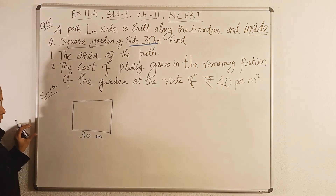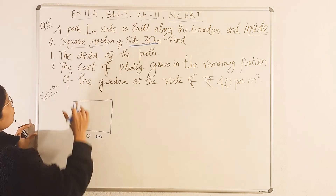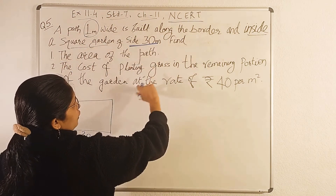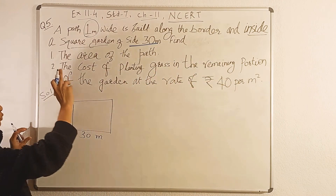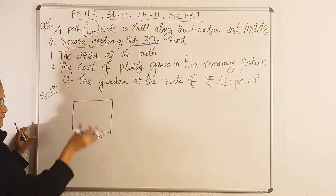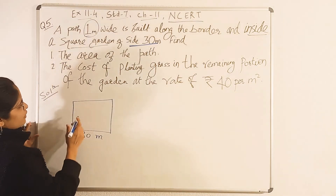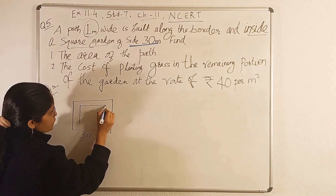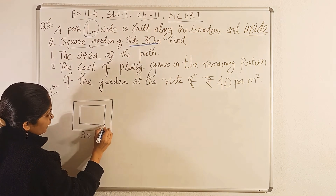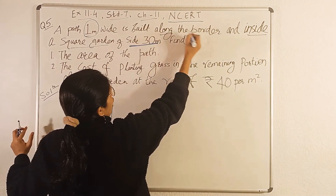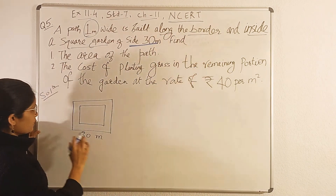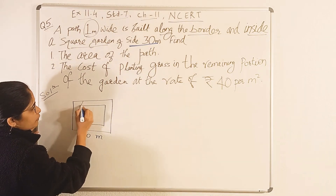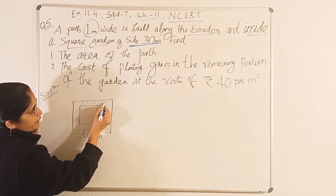So let us try to understand this with the help of a figure. Suppose this is the square garden and length is given to us, that is 30 meter. A path 1 meter wide is built along the border and inside. This path is inside the square garden, along all four sides (charo taraf).